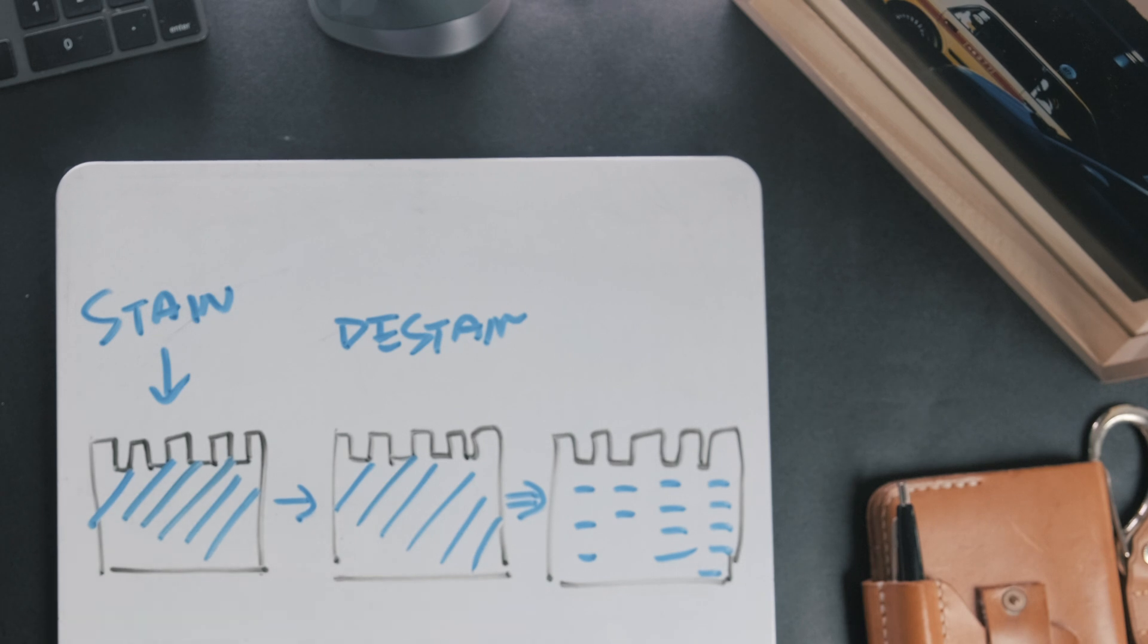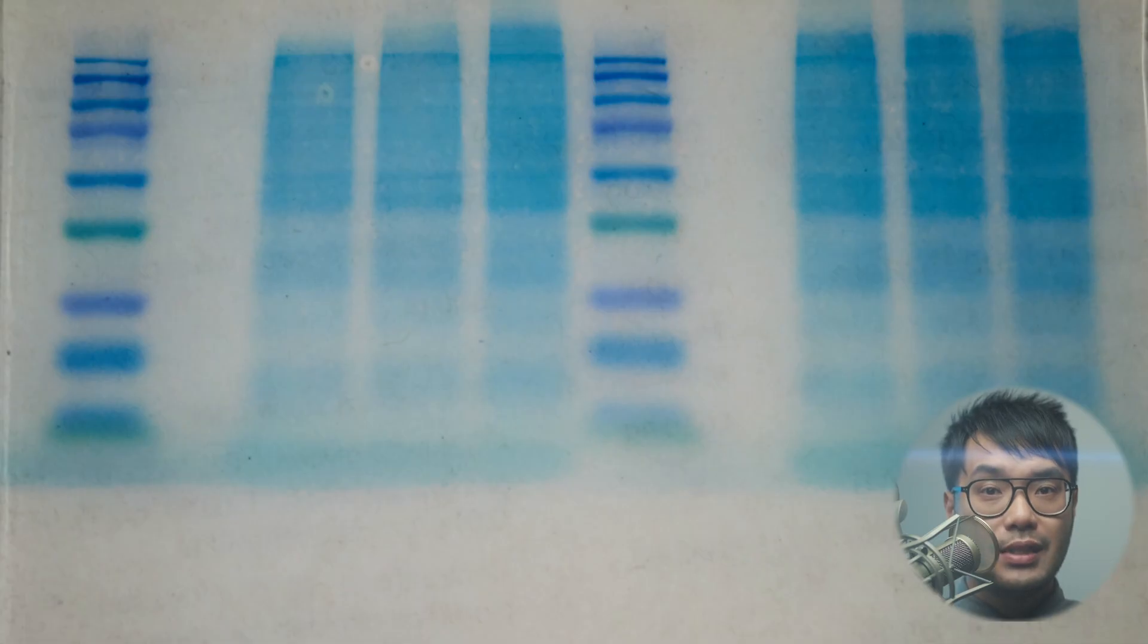After a few washes, the gel is ready for analysis. You should be able to see distinct bands representing different sized proteins across the lanes, with the color intensity of the staining indicative of the protein levels present. This is usually the first step of the analysis.